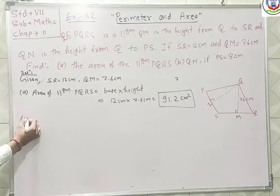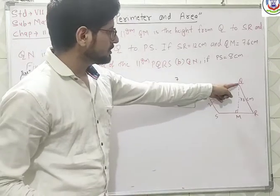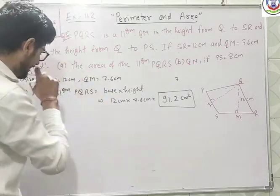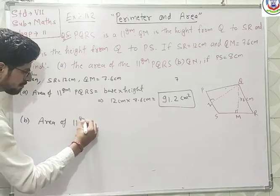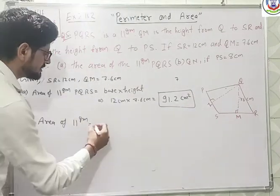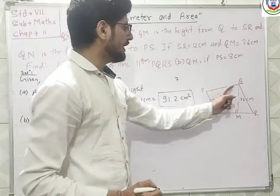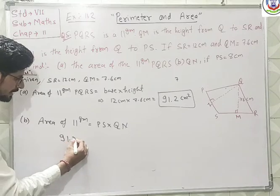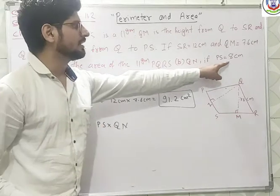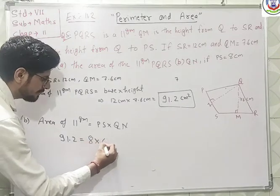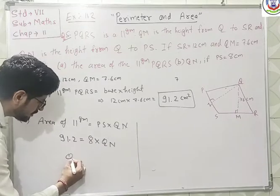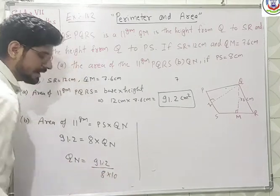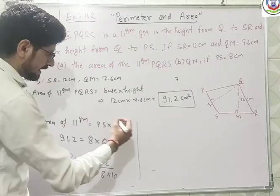Then part D is: we have to find QL, where PS is equal to 8 cm. So again we use the area of parallelogram formula: area equals base multiplied by height. Here PS is our base and QL is our height. We know the area is 91.2, and PS is given as 8 cm, multiplied by QL. So QL is equal to 91.2 divided by 8.